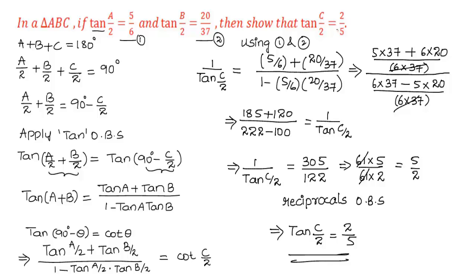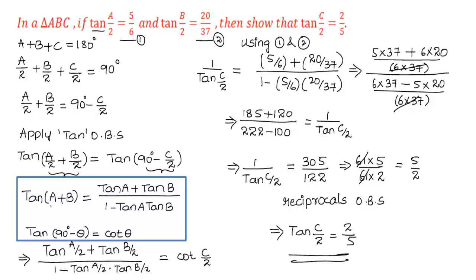Make a note of the formulas: tan(A + B) equals (tan A plus tan B) divided by (1 minus tan A tan B), and tan(90° minus θ) equals cot(θ). Hope you understood the concept. Refer to more videos on trigonometry on our channel vtchacademy.com. Thanks for watching, have a nice day.